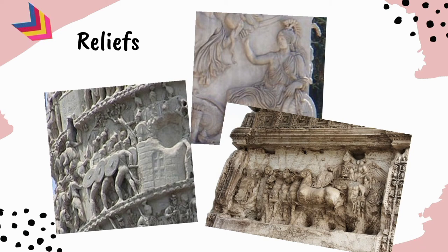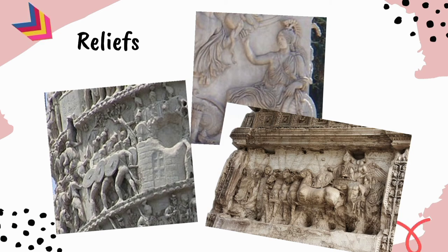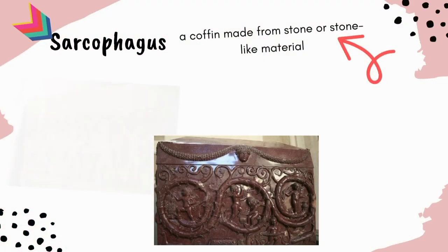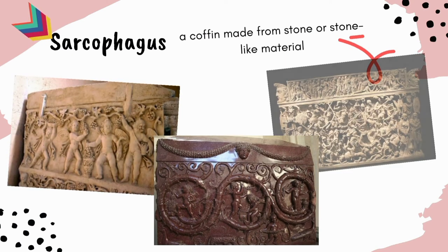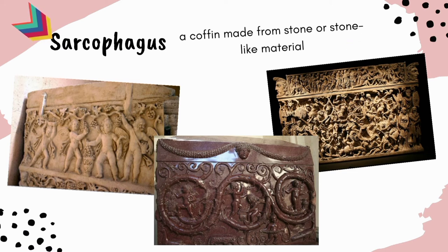A relief sculpture can represent a far wider range of subjects than a statue because of its economy of resources, allowing a better understanding of the messages conveyed. Reliefs are carved directly onto walls, portals, ceilings, columns, floors, and other flat surfaces, making them ideally suited to architectural decoration.